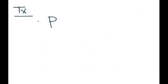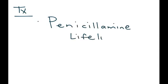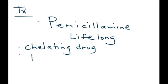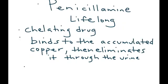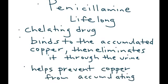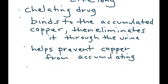Treatment of Wilson disease involves a medication known as penicillamine, and treatment is lifelong. Penicillamine is a chelating drug, which means it binds to the accumulated copper and eliminates it through the urine, helping prevent copper from accumulating. Another important aspect of management is lifelong adherence to a low copper diet.